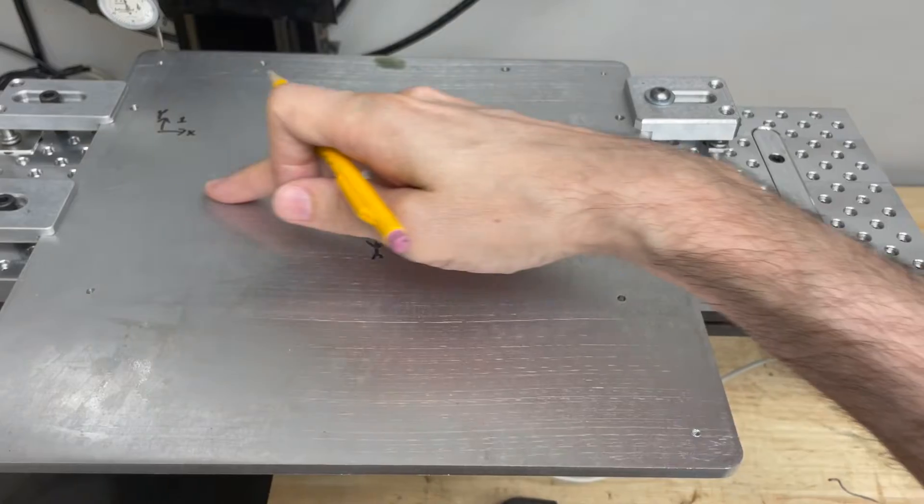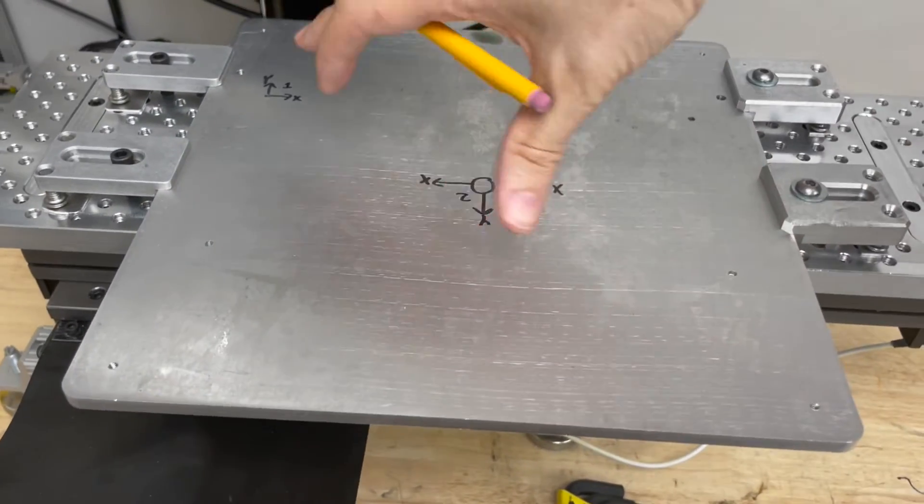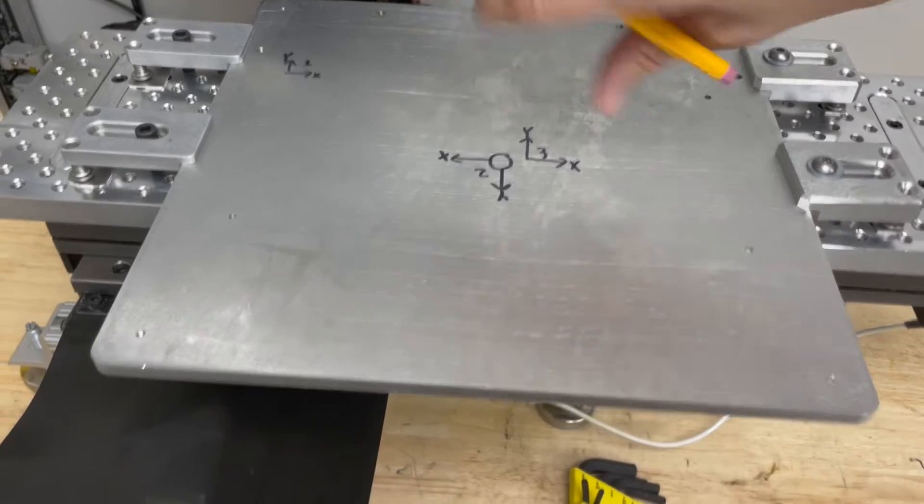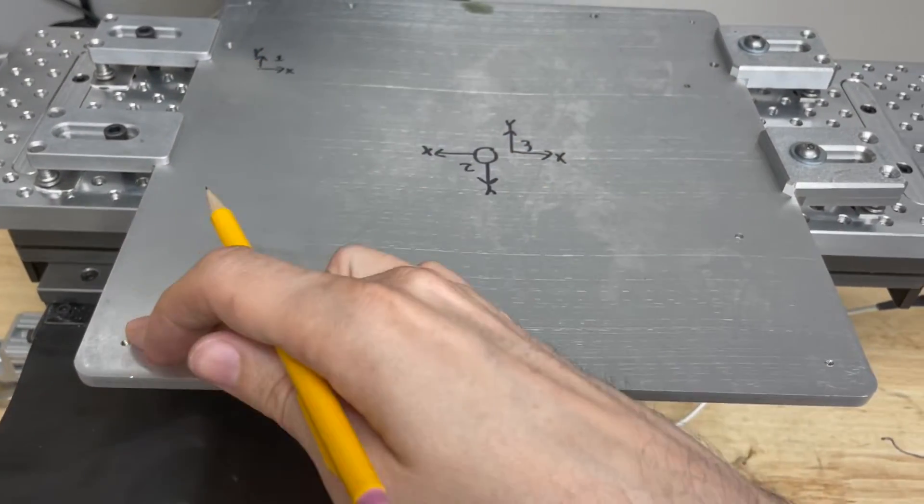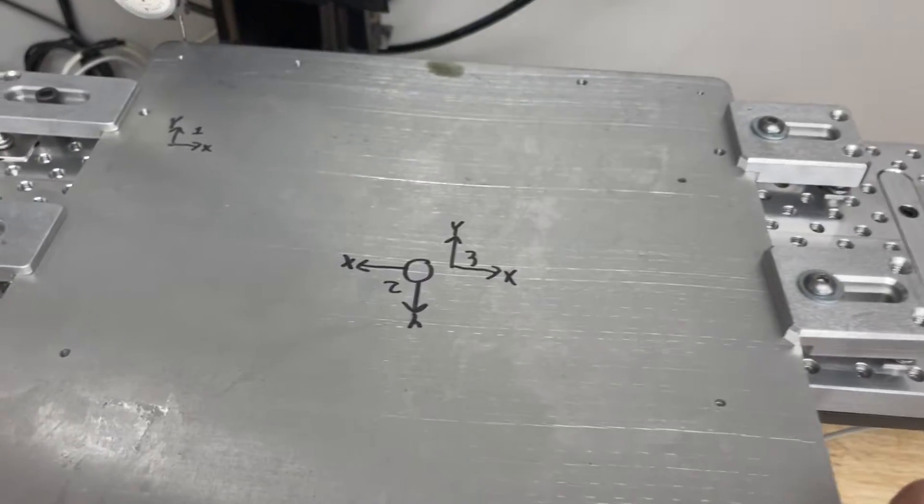I'm gonna do a group of operations on this half and then rotate the board 180 degrees and do the next group of operations on this half. And I'm gonna have three origins.